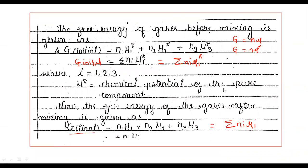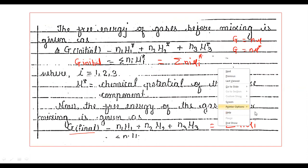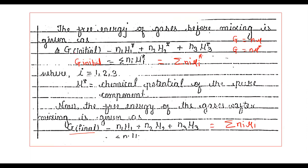The free energy of the gases before mixing — that is, in the initial state — is given by: G initial equals N1 mu1 star plus N2 mu2 star plus N3 mu3 star, where the star indicates the pure component. So before mixing, each compartment contains a pure gas with its own chemical potential.